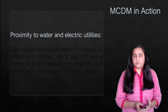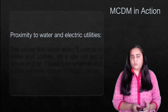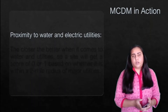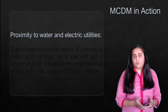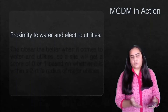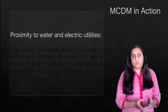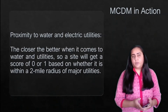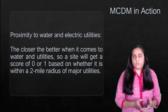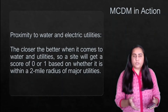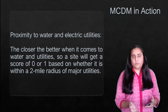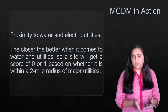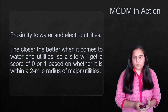The next criterion is proximity to water and electric utilities. Since you want to build a data center, water is required for cooling purposes and electricity is required to keep the servers running. Closer is better, so a site gets zero or one based on whether it is within a two-mile radius of major utilities.